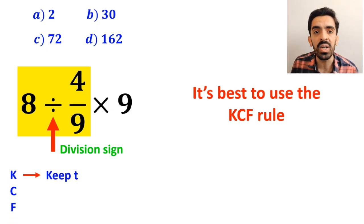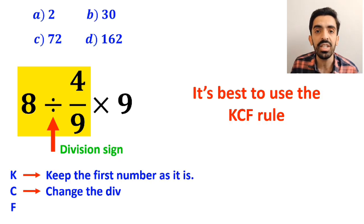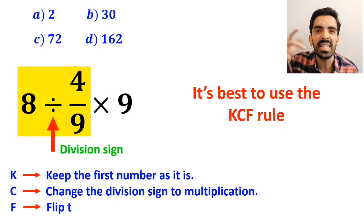C stands for change the division sign to multiplication, and F stands for flip the second fraction.